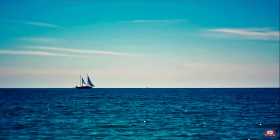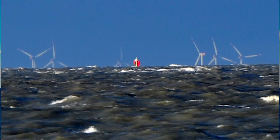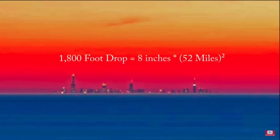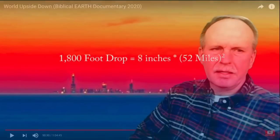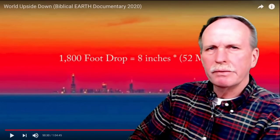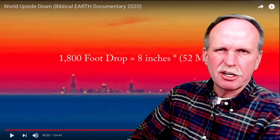The documentary claims that things don't drop the farther they go — they remain at the same height. For example, here is a picture of the Chicago skyline taken from 52 miles away. According to their formula, the Chicago skyline should have dropped over 1,800 feet. Now, I've been through this a number of times and this is exactly what we would expect to see under these conditions from Warren Dunes, Michigan. But let's go through it quickly.